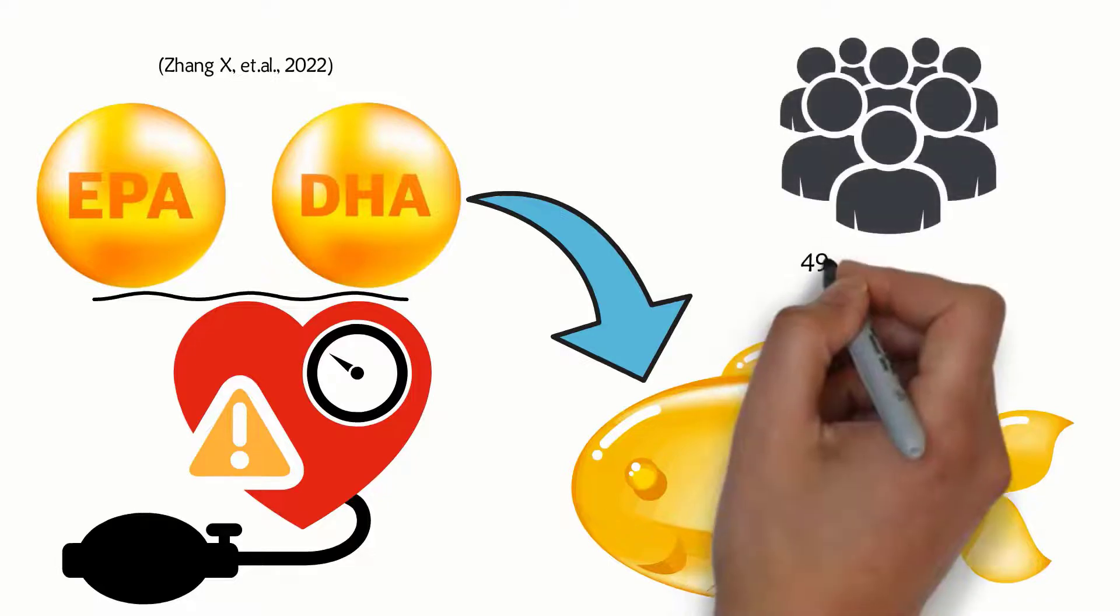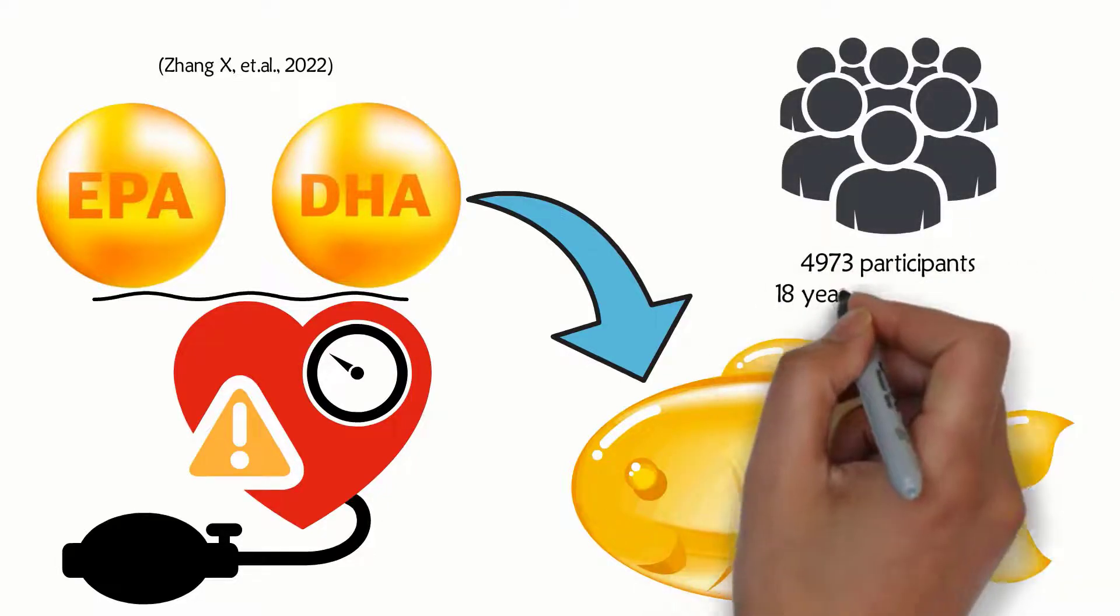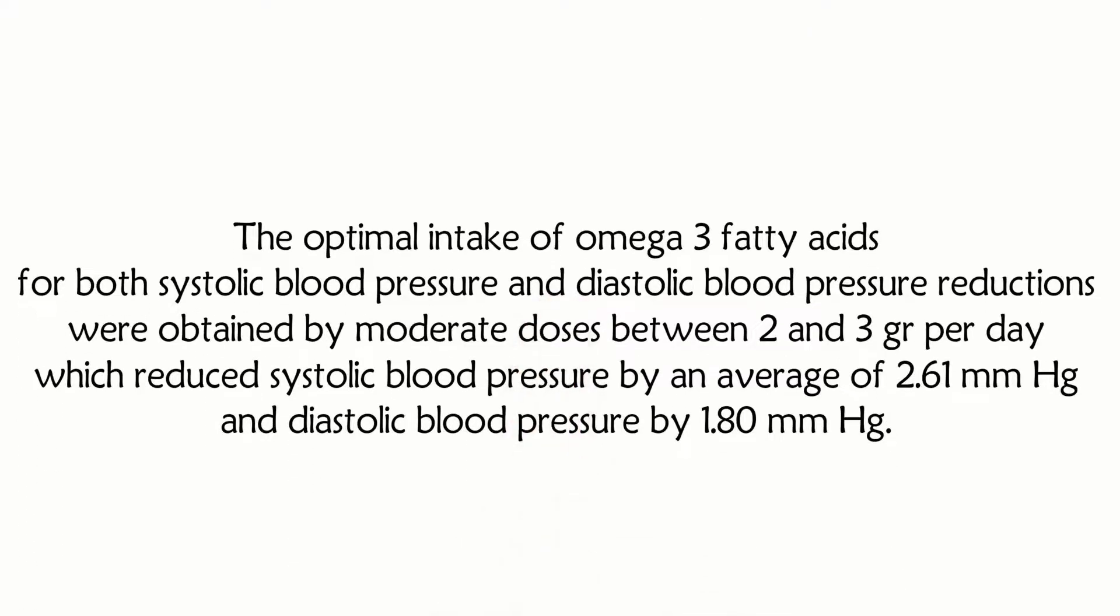There were 4,973 participants 18 years old and older. The optimal intake of omega-3 fatty acids for both systolic blood pressure and diastolic blood pressure reductions were obtained by moderate doses between 2 and 3 grams per day, which reduced systolic blood pressure by an average of 2.61 millimeters of mercury and diastolic blood pressure by 1.80 millimeters of mercury.